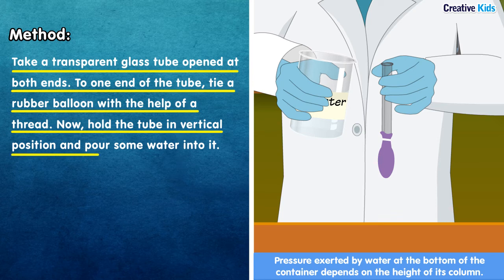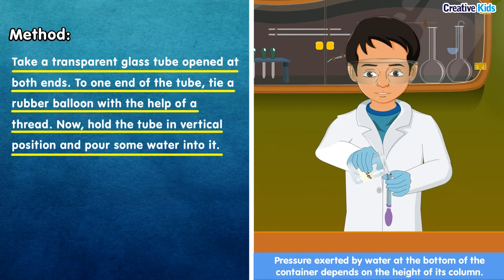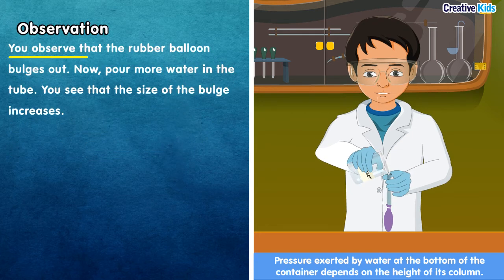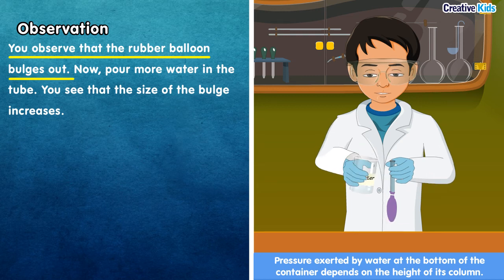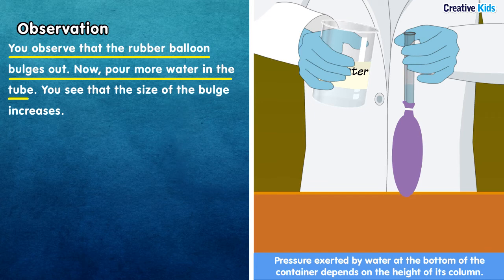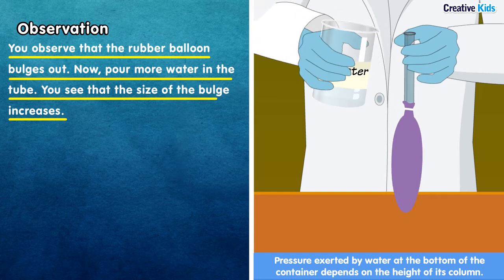Hold the tube in a vertical position and pour some water from the other end. Observation: when you pour water into the glass tube, the rubber balloon bulges out. When you pour more water, the size of the bulge increases — the bulging of the rubber balloon increases with more water.